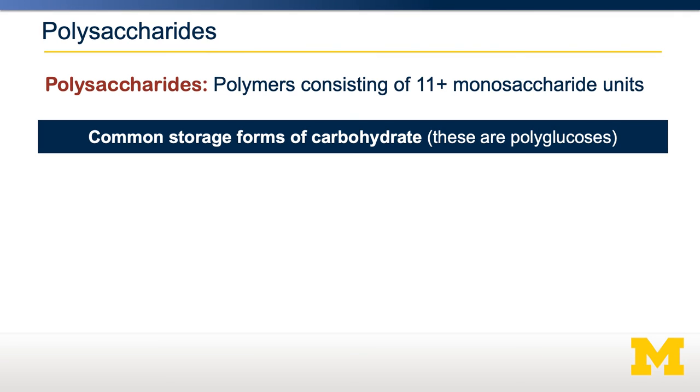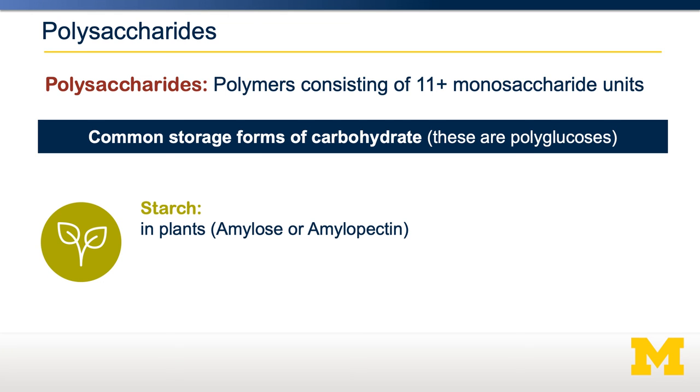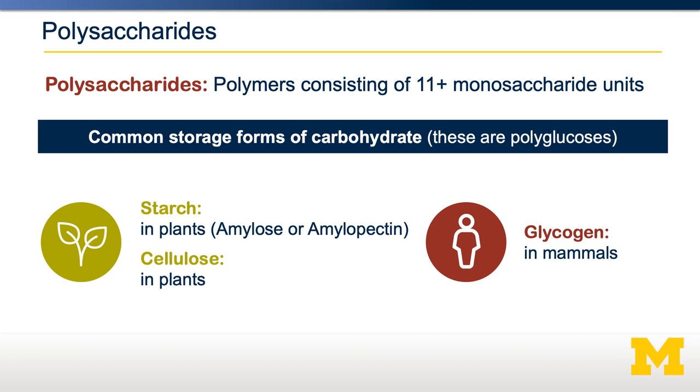Polysaccharides are the major storage forms of carbohydrates in both plants and animals. The common storage forms are all polyglucoses—long chains of glucose. Three forms are important: starch (a combination of amylose and amylopectin), cellulose, and glycogen. Since all are polyglucoses, what differs is where the glycosidic linkages are, and as we'll see, these linkages cause polysaccharides to behave very differently in a nutritional context.